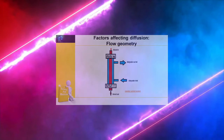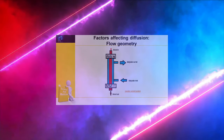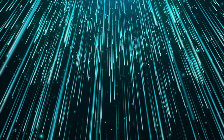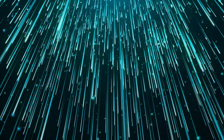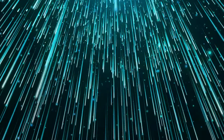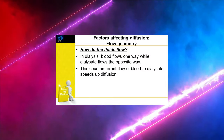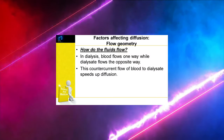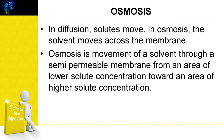The next factor is flow geometry. In dialysis, blood flows in one direction while dialysate flows in the opposite direction — this is called a counter-current system. There is also a co-current system in which blood and dialysate flow together. The counter-current flow of blood to dialysate speeds up diffusion.